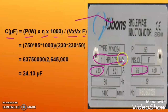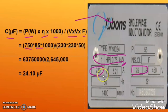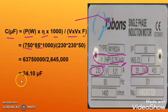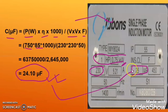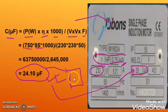The power rating is 0.75 kilowatt, which is 750 watts. Efficiency is not mentioned, so I take 85%. Voltage is 230, and frequency is 50 Hz. When we calculate, we get 24.10 microfarad, which is very close to the nameplate value of 24. So we can use the next standard available size, which is a 25 microfarad capacitor for this induction motor.